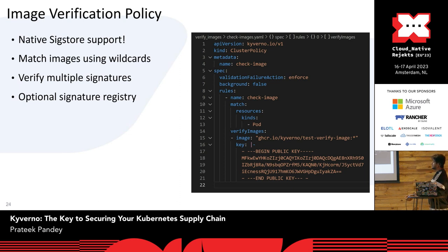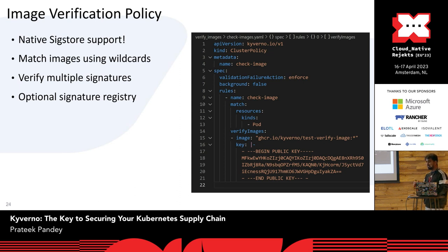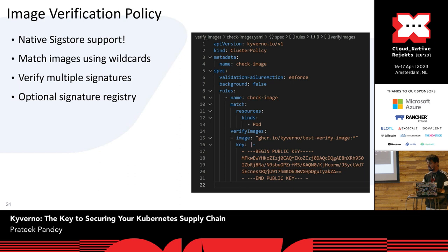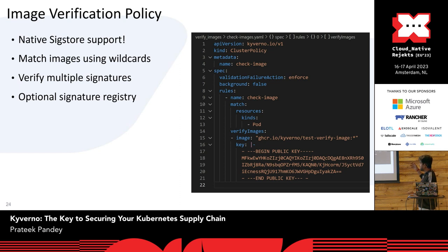This is the image verification policy. We use Cosign to validate image verifications. If you have signed the images, you can automate verification — verifying image certificates, SHAs, and everything using Kyverno. Wildcards can be used to match all kinds of images without specifying a name. In this policy, I'm verifying an image using a verify image rule; the image has a wildcard tag so all tags will be verified, and I have a key signed using Cosign to verify that image.